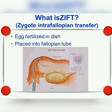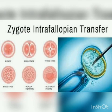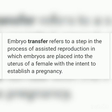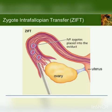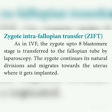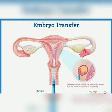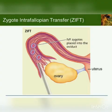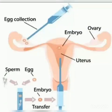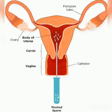In zygote intrafallopian transfer (ZIFT), as in IVF, the zygote up to the 8-blastomere stage is transferred into the fallopian tube by laparoscopy. The zygote continues its natural division and migrates towards the uterus where it gets implanted. In intrauterine transfer (IUT), by contrast, embryos with more than 8 blastomeres are inserted directly into the uterus to complete further development, rather than into the fallopian tube as in ZIFT.